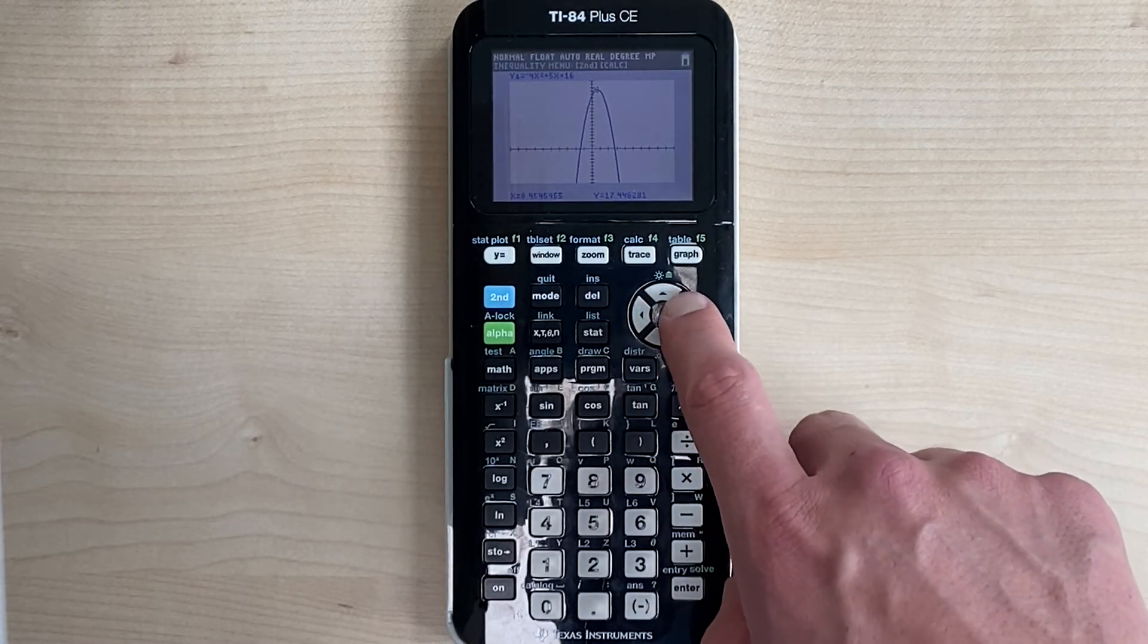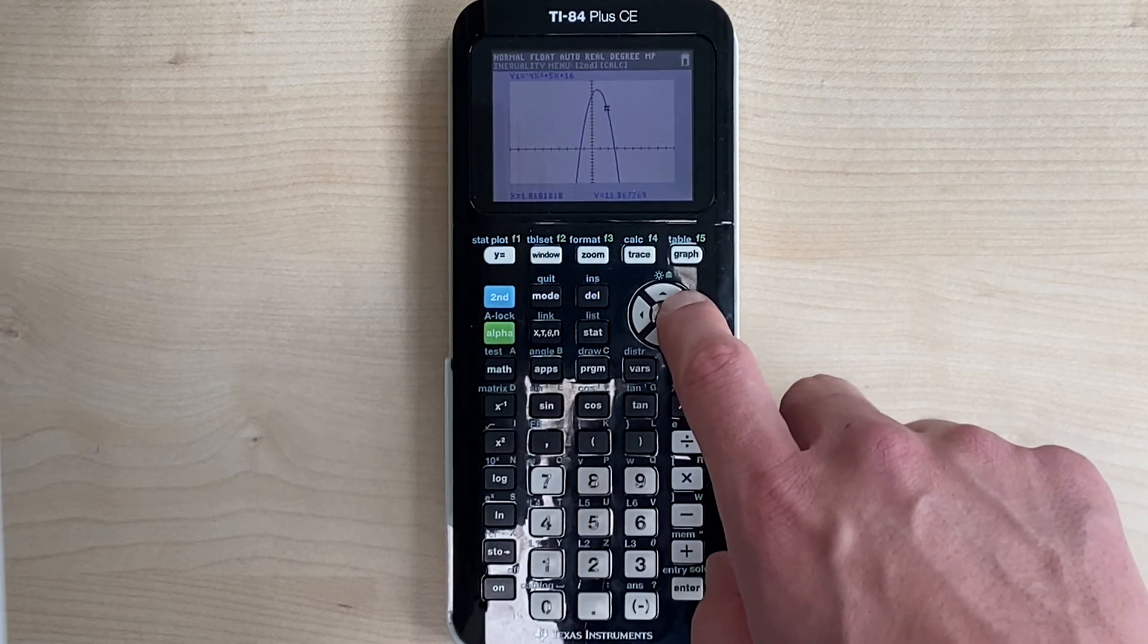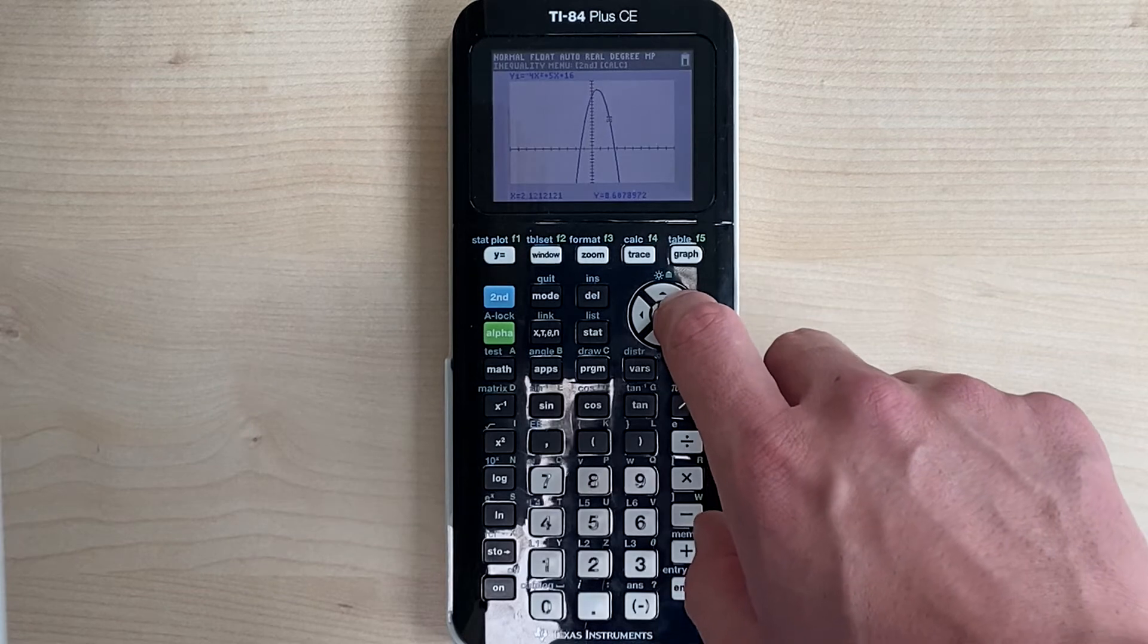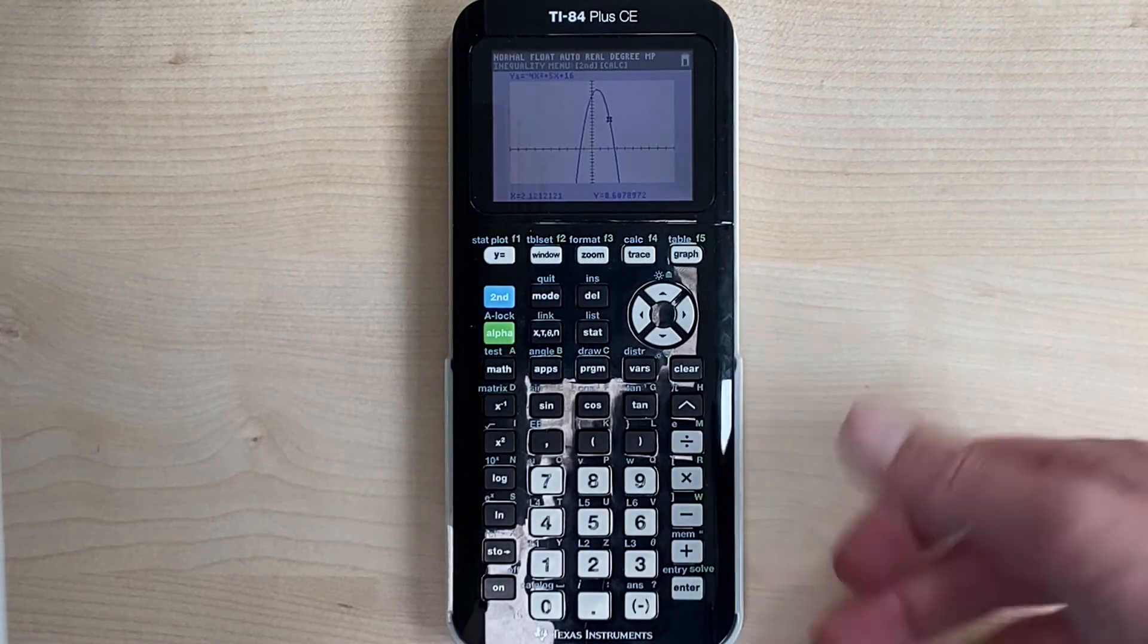So for instance, when we click on trace, there are a lot of different x and y values that we could get. And for the most part, when you do trace, you're not going to get whole number values. You might, but in this case...